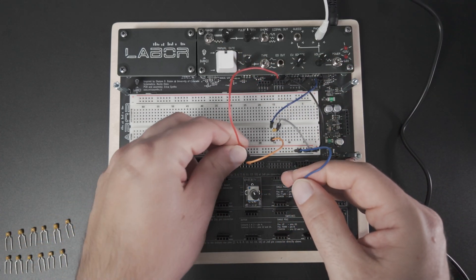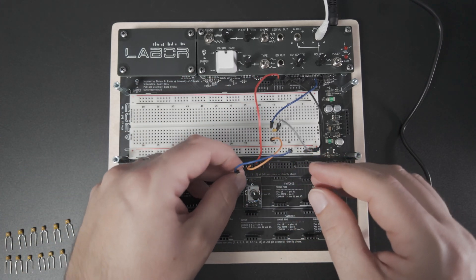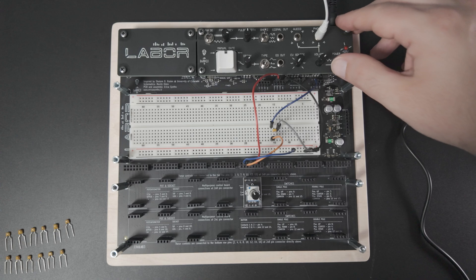Note that you can change the direction of the potentiometer by switching the counterclockwise and clockwise wires. Now you have to turn it the other way.